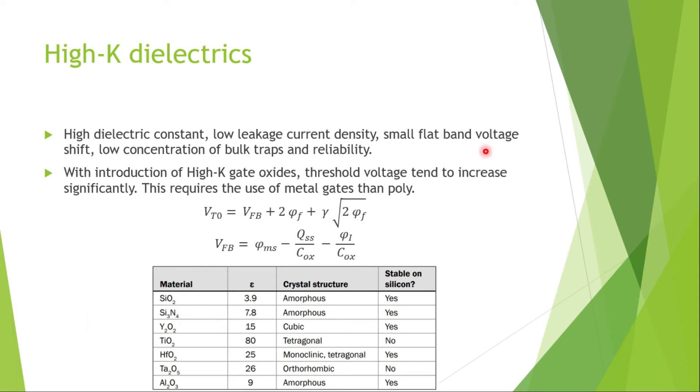When I say small flat band voltage shift, it's this voltage in VT0. This is the threshold voltage equation. If you're not familiar with this, I can make another video where I can explain how this equation came. This is the device physics of MOSFET, where this V flat band voltage, there shouldn't be more shift in V flat band voltage is what it is saying. If it is there, the VT0, the threshold voltage, it can vary a lot, and there will be increase or decrease in the threshold voltages.